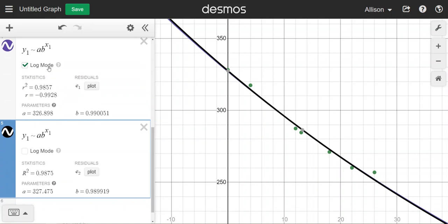So with the button checked we have an R squared value of 0.9857. Without it checked we have an R squared value of 0.9875. They're both extremely good fits however the non-checked one is slightly higher in this case. It can be reversed depending on what the data set is like. Sometimes the log mode button box checked you can have the higher R squared.